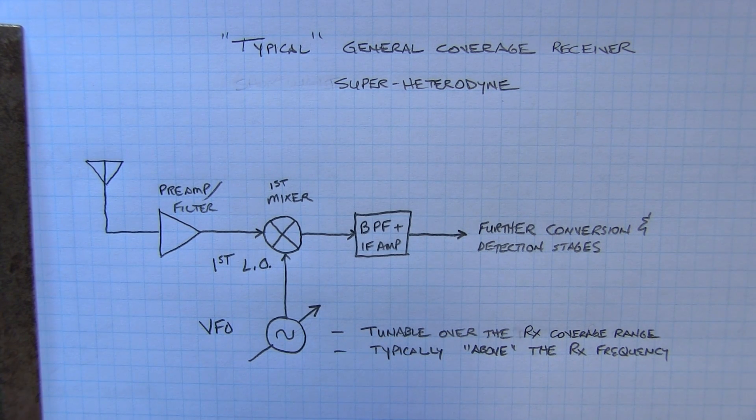The Wadley Loop overcomes this problem not by making a very stable VFO, but by simply canceling the drift that might occur in that VFO.